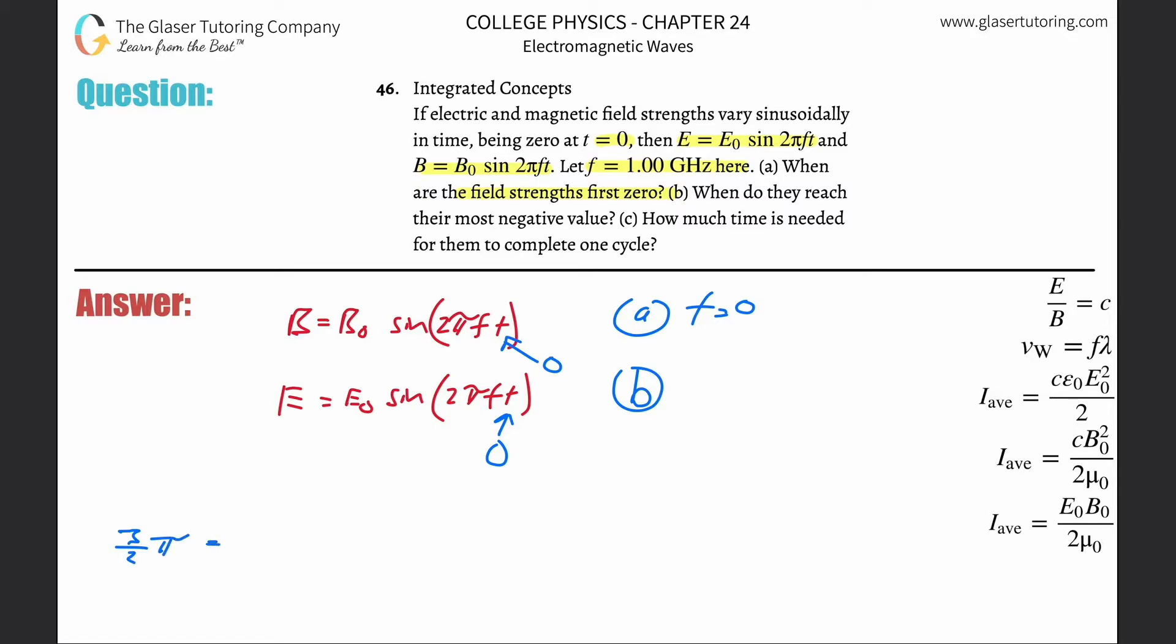And that's then going to be equal to now two pi times the frequency they told you, one times 10 to the ninth, multiplied by the time. So I want to solve this for time. So simply now divide this term out.